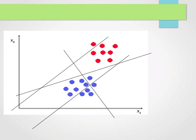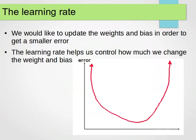Now, speaking about changing bias and weights, we need to be familiar with something called the learning rate. The learning rate is used to control how much we change the bias and the weights. So we'd like to update the weights and bias in order to get smaller errors to find our separation line or separation plane or hyperplane depending on the dimensionality of our data. The learning rate will help us control how much we change the weight and the bias.